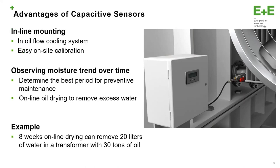The advantages of sensors placed directly in the transformers: we can choose the most interesting and representative points for sampling. A typical location is on the oil flow in the cooling system, where the temperature is very easy to monitor. Observing the moisture in oil over time, we can determine the timing for preventive maintenance. The typical maintenance to remove water — for example, with eight weeks of online drying — it's possible to remove 20 liters of water from a transformer of 30 tons.